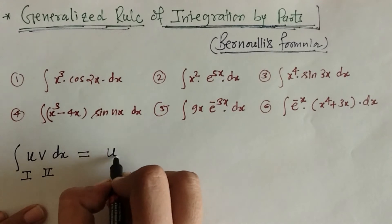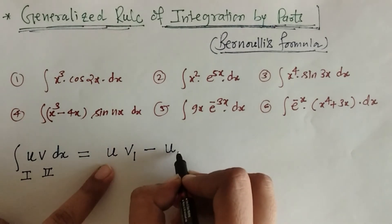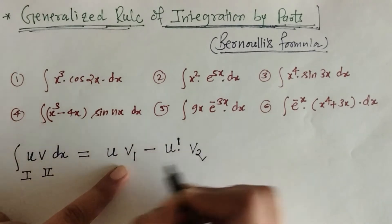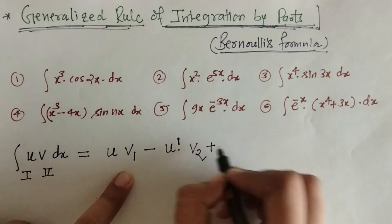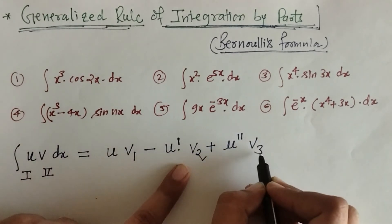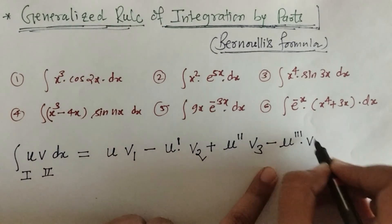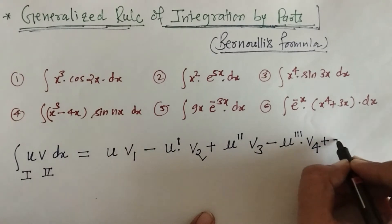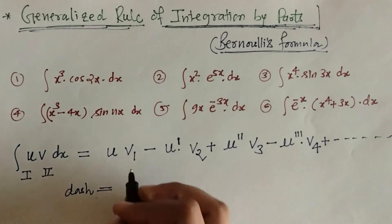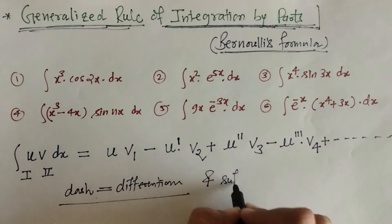So what we have to do: we take the first function as it is, then the second function's integral, minus the first function's derivative — we denote this by a dash — into the integral v₁, then plus the second derivative of u times the third integration of v, then minus the third derivative times the fourth integration, and so on. The dash notation denotes differentiation, and the suffix notation denotes integration.